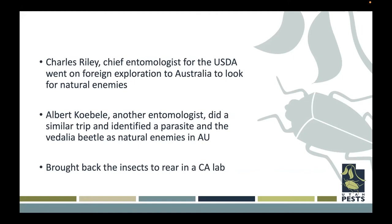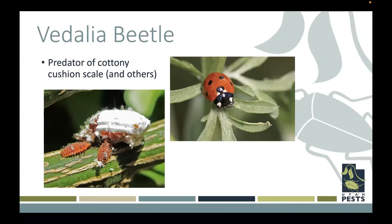Charles Riley and Albert Koebele identified a couple of different natural enemies — primarily a parasite and then the Vedalia beetle, which ultimately ended up being the insect they used. They brought back that Vedalia beetle and reared it in a California lab. The Vedalia beetle is a type of ladybug or ladybird beetle, and they're a predator of cottony cushion scale and other insects as well. We can see the cottony cushion scale here — this is just like a protective covering. Ladybugs love to eat these cottony cushion scales, especially the Vedalia beetle.